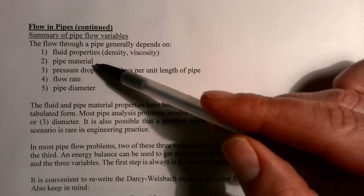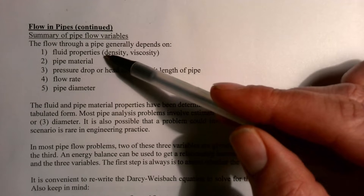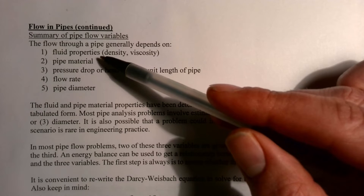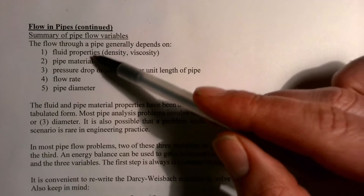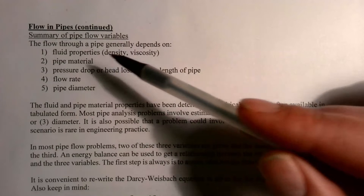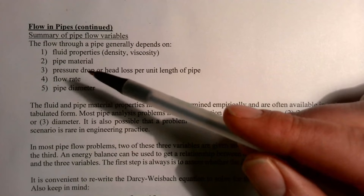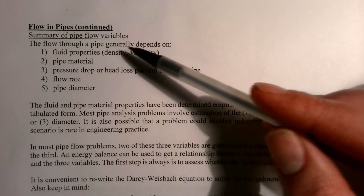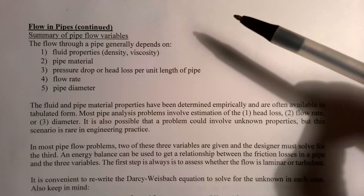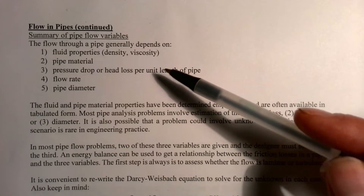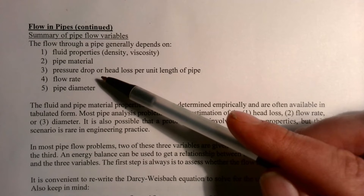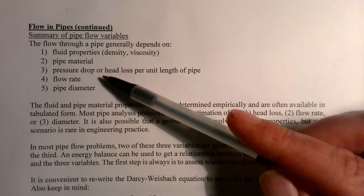Both fluid properties and roughness height are typically values that have already been determined for different materials. Most of the problems we're doing, we already know what kind of pipe we're going to use and what the fluid is, so those properties tend to already be known. That leaves us with the last three problem types, which are the ones we often have to solve in engineering applications.